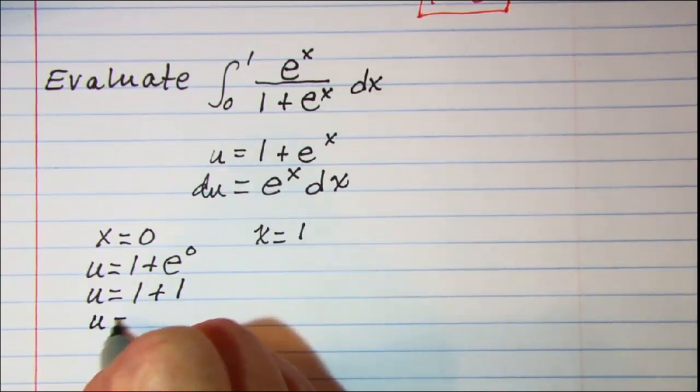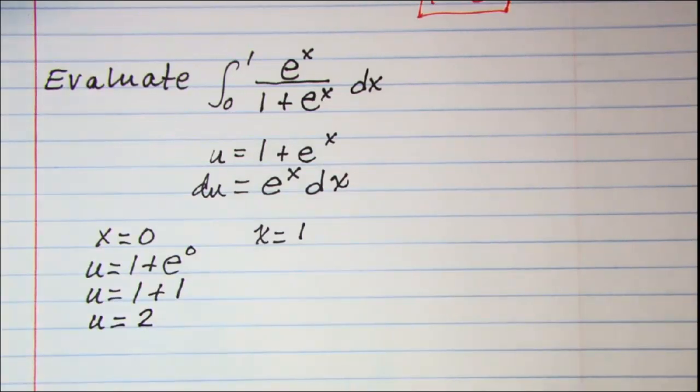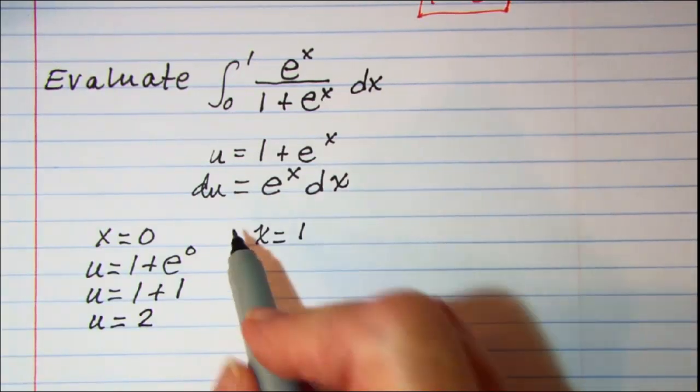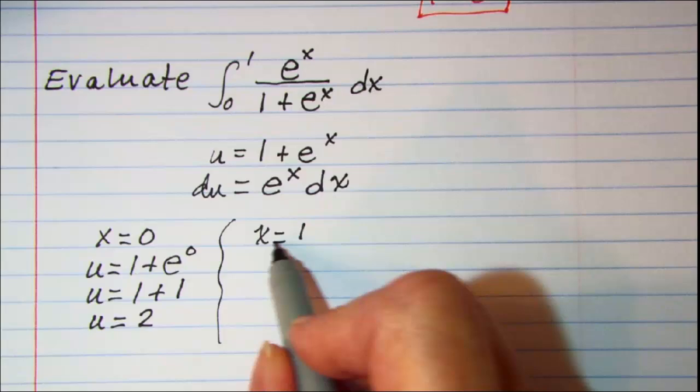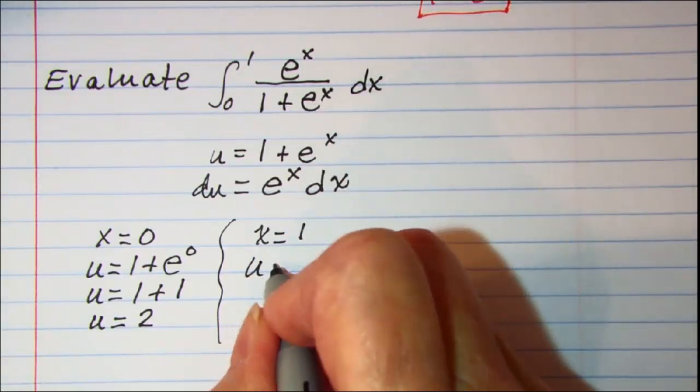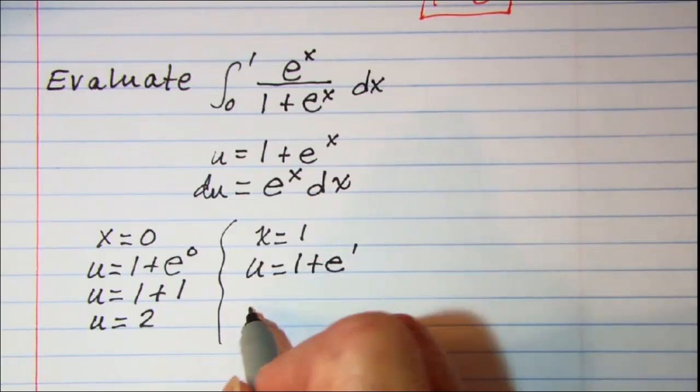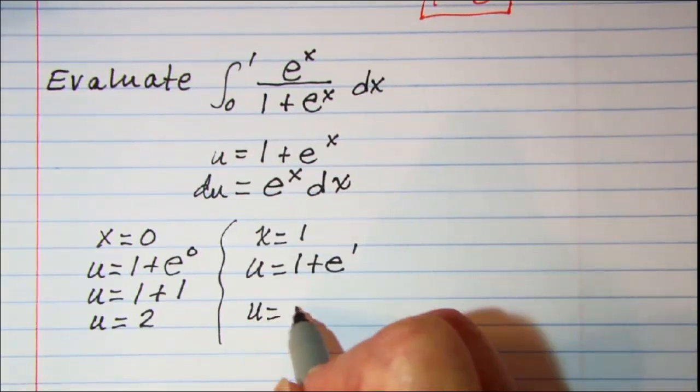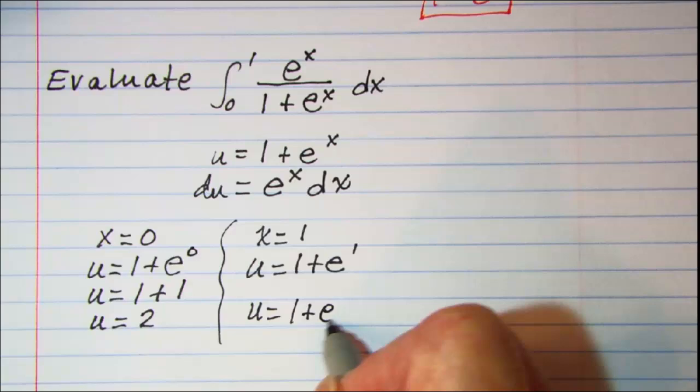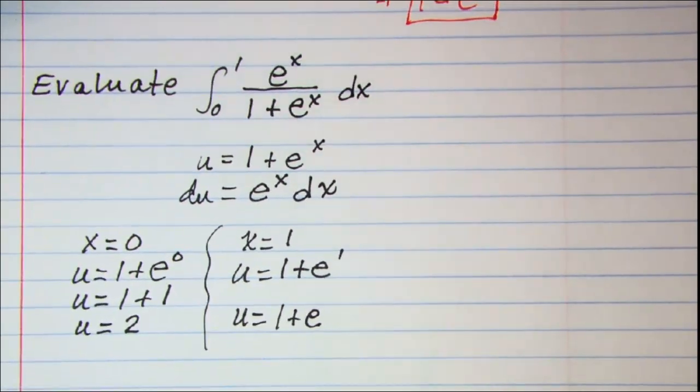And then on this one, x is 1, so u is 1 plus e to the 1. So my upper limit of integration will just be 1 plus e. Now let's do our substituting.